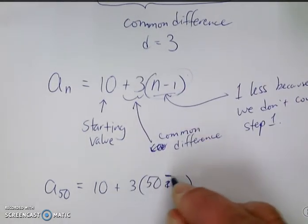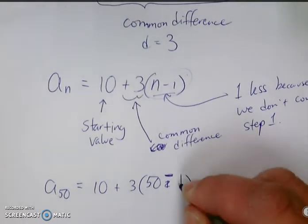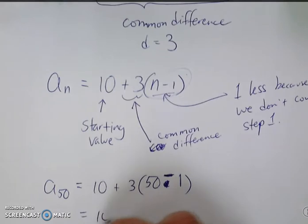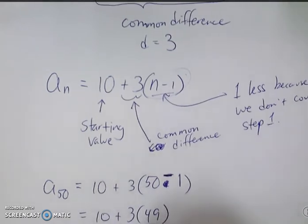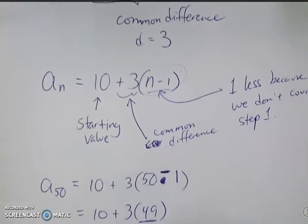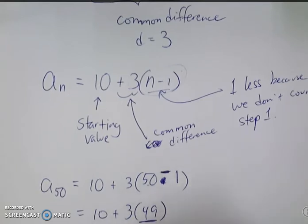That should be a minus 1. Ignore that little jump there. So 50 minus 1, that's going to be 10 plus 3 times 49. And again, that's 49 steps. 50 is 49 steps after number 1. So it's 10 plus 147 or 157.